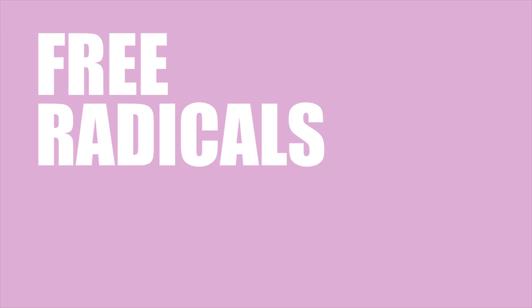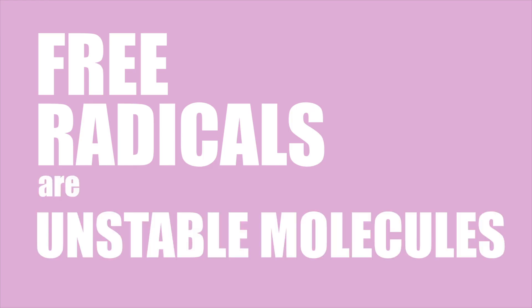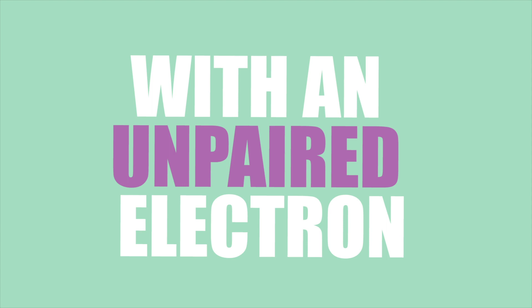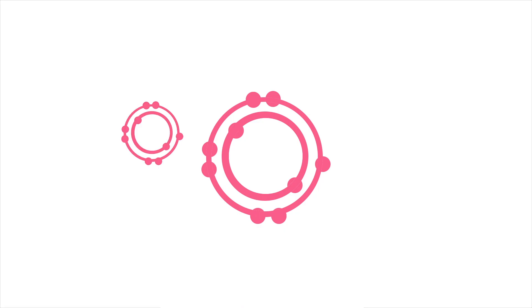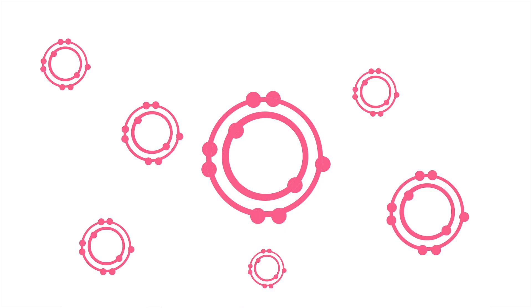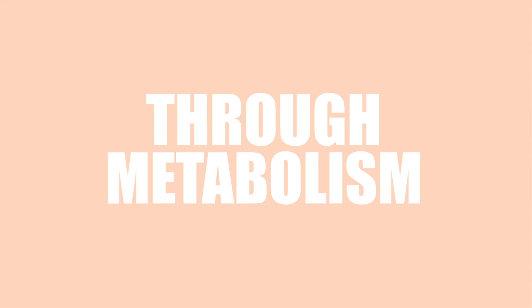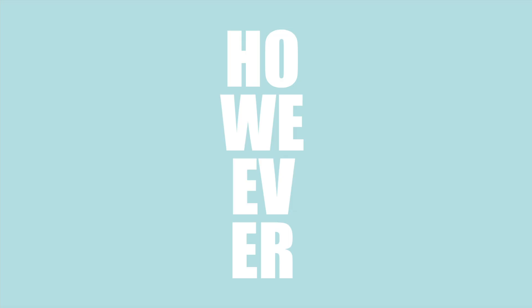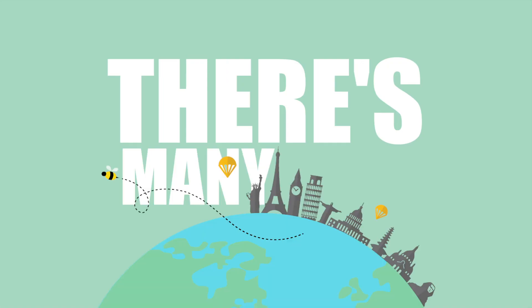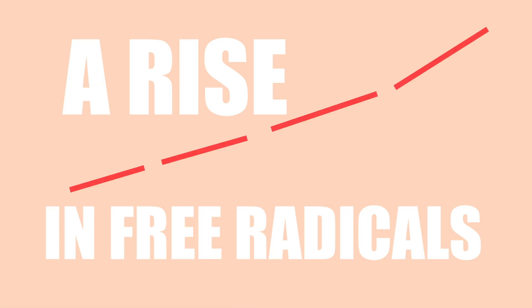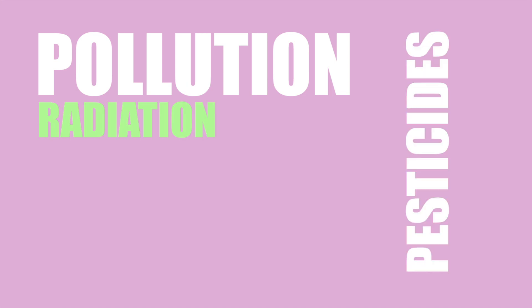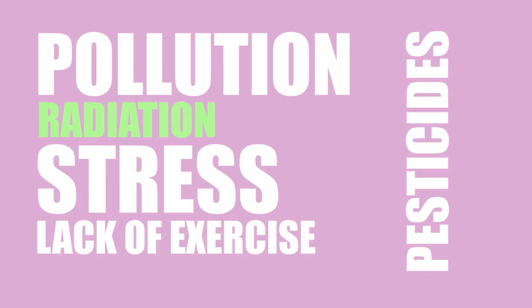So how does oxidative stress occur? Free radicals are unstable molecules with an unpaired electron. They can occur naturally in our own bodies through metabolism. However, there are many environmental factors which can cause a rise in free radicals, such as pollution, radiation, pesticides, stress, lack of exercise and lack of sleep.